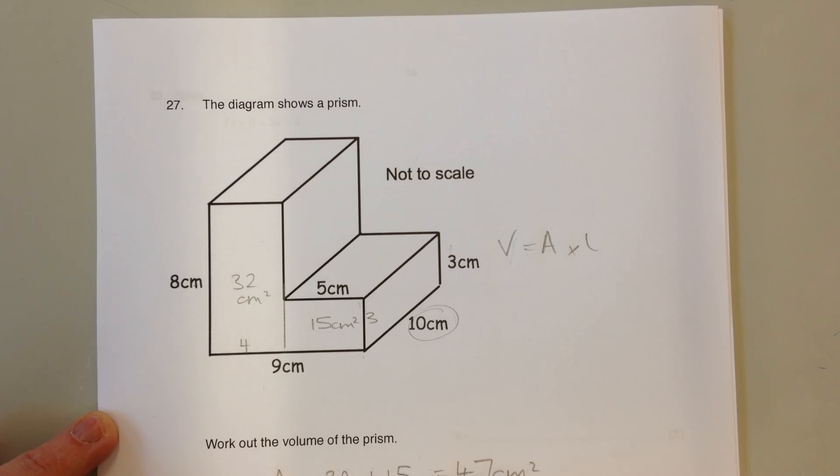To find the volume, multiply the 47 by the length to get 470 centimeters cubed.